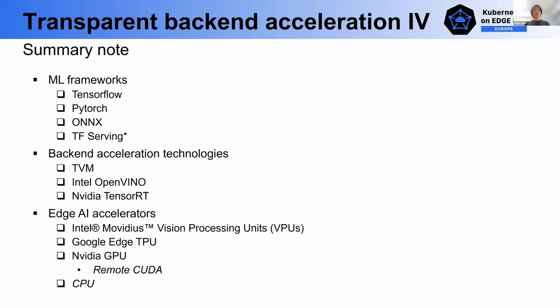In summary of this part, now we can support several upstream machine learning frameworks: TensorFlow, PyTorch, ONNX, and close to TensorFlow Lite system. There are a few backend acceleration technologies available in our system, including TVM, Intel OpenVINO, and NVIDIA TensorRT. We also enable those popular Edge AI accelerators: Intel Movidius VPU, Google Edge TPU, NVIDIA Edge GPU. We also leverage some technologies like Remote CUDA to connect Remote GPU to any Edge device to do machine learning inference. In some cases, we use CPU to accelerate machine learning inference.